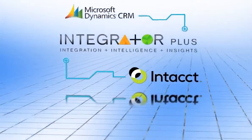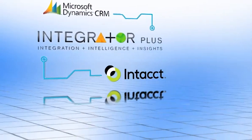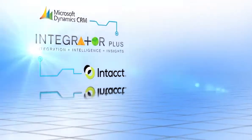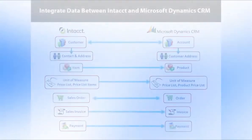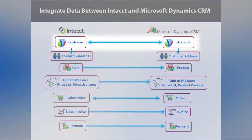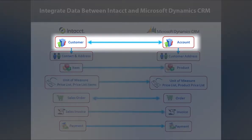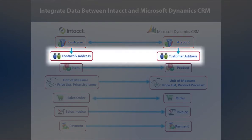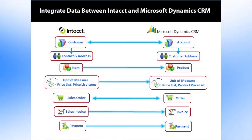Integrator Plus is built on the Windows Azure platform and resides between Microsoft Dynamics CRM and Intact. As you can see from the graphic, customer and account information is a two-way integration between both systems. Customer address information in CRM comes over to Intact as contacts, which is basically address information in Intact. Some data is mastered in your accounting system, so these objects use a one-way integration from Intact to CRM.